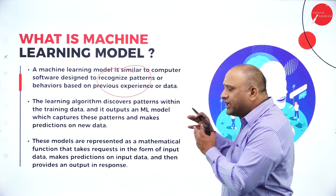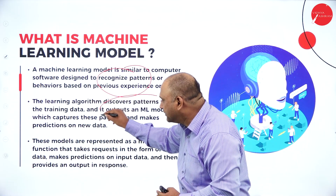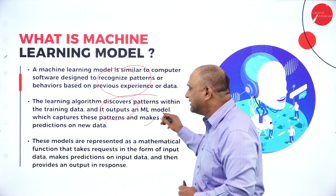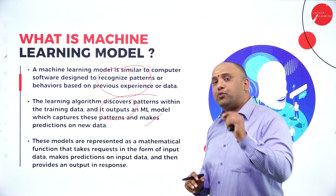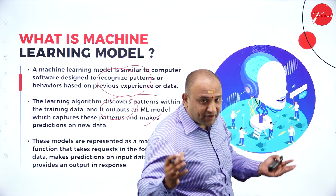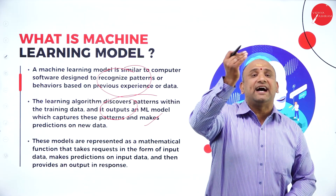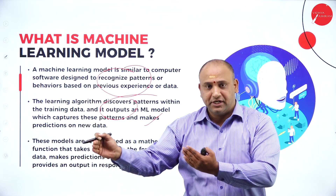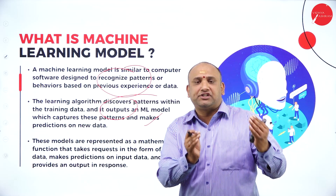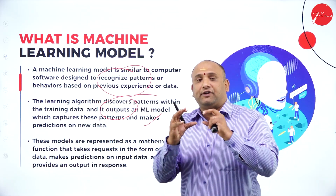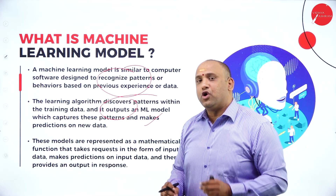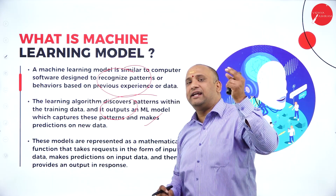The learning algorithm tries to discover patterns within the training data and outputs a machine learning model which captures those patterns and predicts new data. With the previous experience and mindset already built, we use that data to start predicting new values. For example, in a cricket match during a powerplay from the first to the fifth over, the number of runs scored by a batsman is anywhere between 50 to 60 runs.